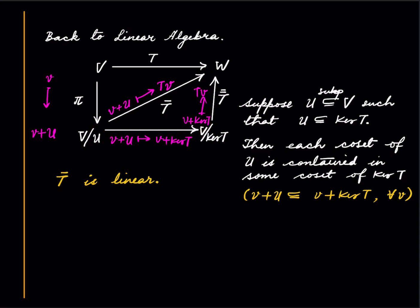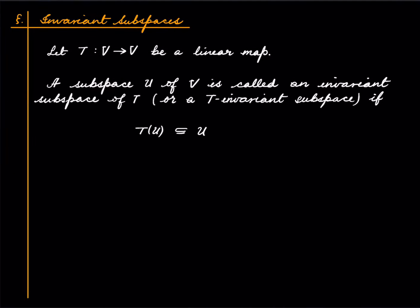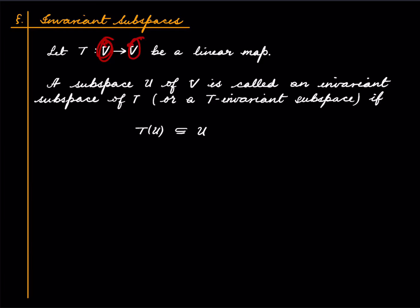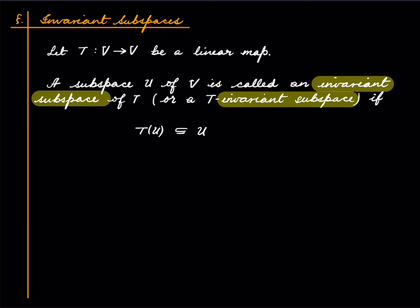This has an application useful in inductive reasoning to prove linear algebraic facts. Let us introduce the notion of an invariant subspace. Suppose T is a linear endomorphism of V — domain and target are the same. A subspace U of V is called a T-invariant subspace if T of U is contained in U. We do not insist that T of U equals U, just that the image of U under T is contained in U.